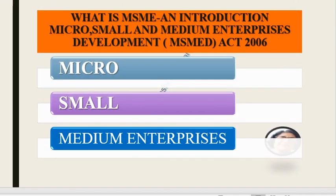First of all, we will look at the MSMED Act 2006, which stands for Micro, Small and Medium Enterprises Development Act. Under this Act, enterprises are divided into three categories: micro enterprises, small enterprises, and medium enterprises.